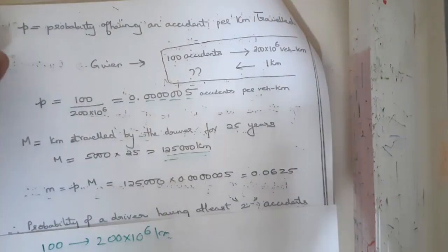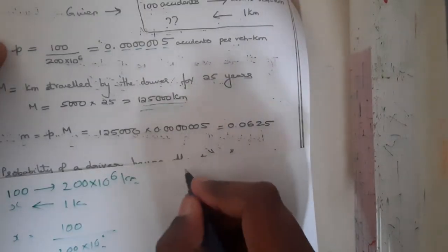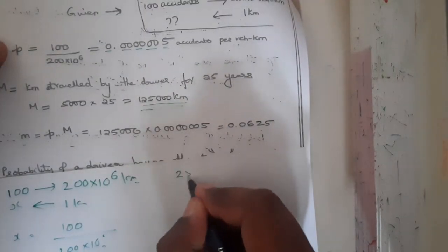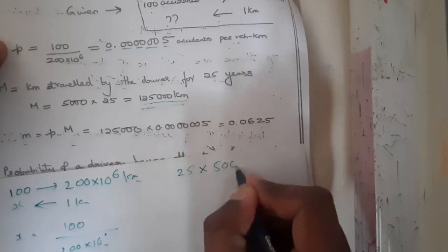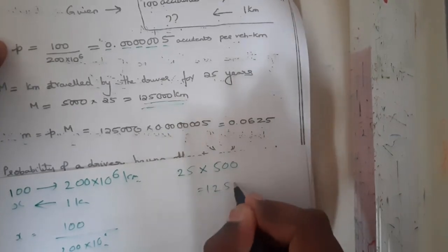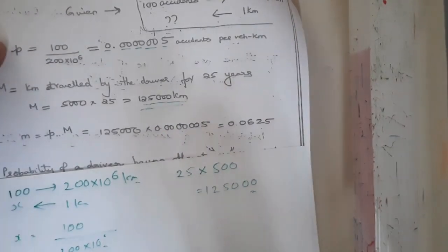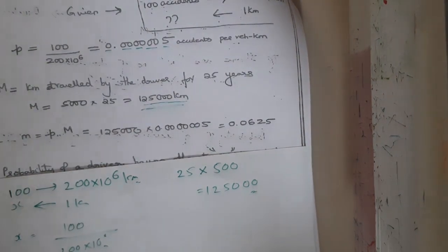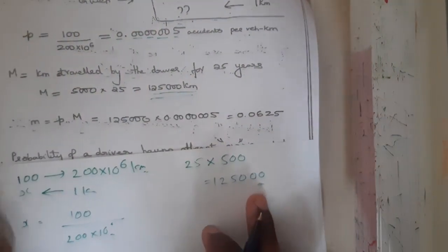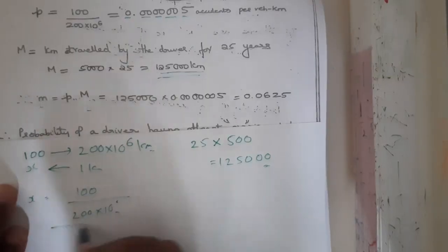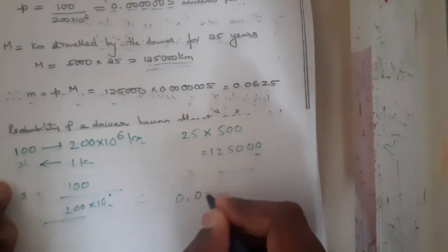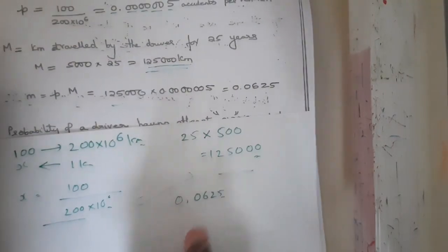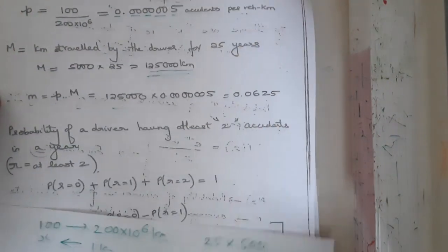The driver has a 25-year career, traveling 500 kilometers per year, giving a total distance of 12,500 kilometers. Multiplying the probability by the distance: m = 0.0000005 × 12,500,000 = 0.0625.